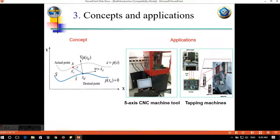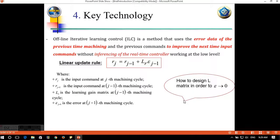For 5-axis CNC machine tool, we use ILC and equivalent contour error model for contouring control. And in the tapping machine, we use ILC and equivalent contour error model to synchronize the speed between the spindle and the Z axis.